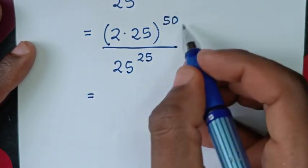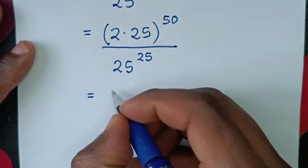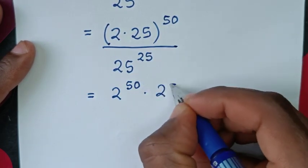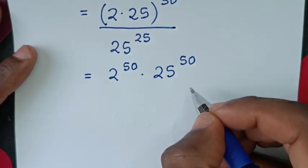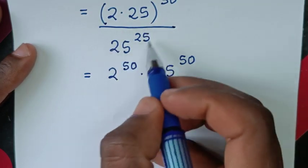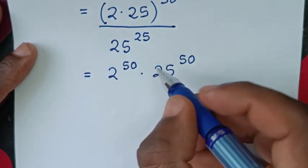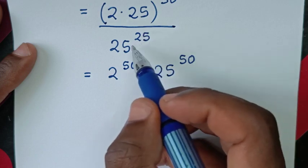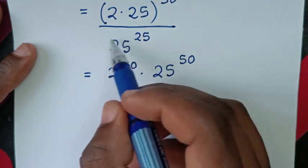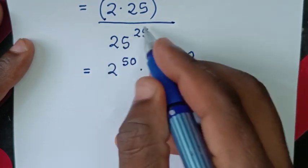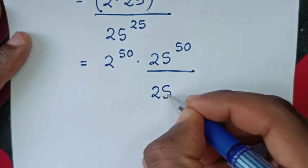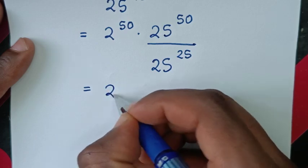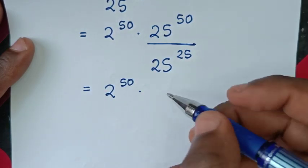We take the power of 50 inside the bracket, giving 2 power of 50 times 25 power of 50. Then we divide by 25 power of 25, since both share a base of 25.